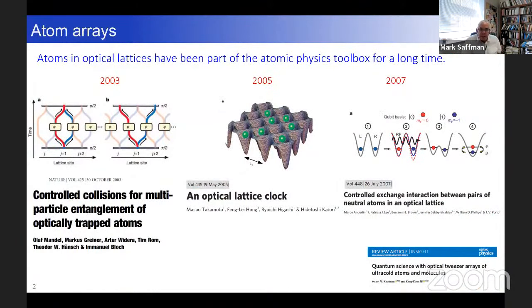So atom arrays have been around for a long time and have been an important part of the atomic physics toolbox for many years. And I just picked out a couple examples here. There are many more examples, of course. And if you look back 15, 20 years ago, we saw some of the very first examples of on-demand entanglement generation between cold atoms and single atoms, done in optical arrays, done with collisional or motional control of the atoms, state-dependent motional control. This is a very well-known work from Henshaw Bloch from 2003.